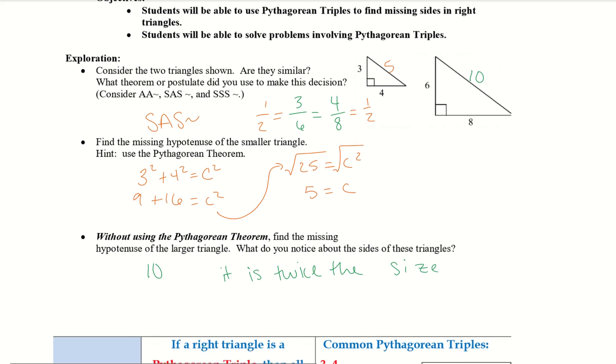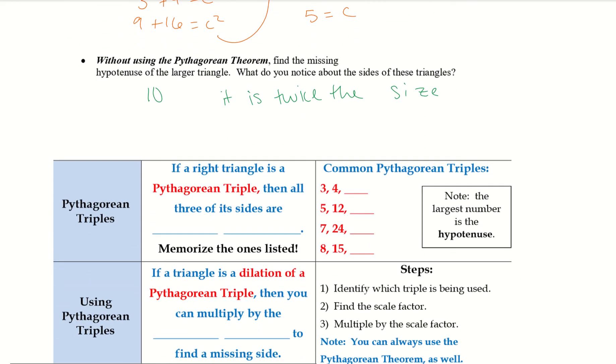Alright, let's go ahead and get into some vocabulary. So if a right triangle is a Pythagorean triple, then all three of its sides are positive integers. Common Pythagorean triples should be 3, 4, 5, 5, 12, 13, 7, 24, 25, and 8, 15, 17. Note the largest number is the hypotenuse. So we talked about that in 7.1, where that largest number is the hypotenuse. And we really need to keep that in mind.